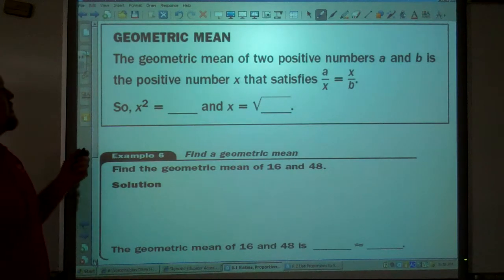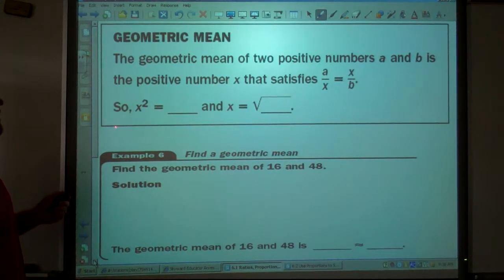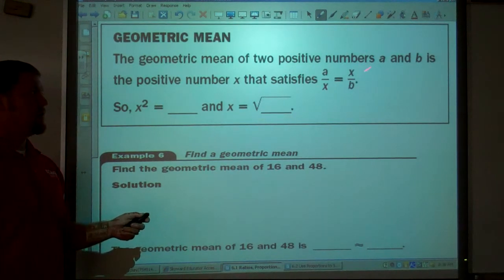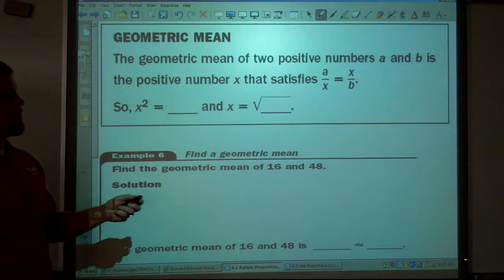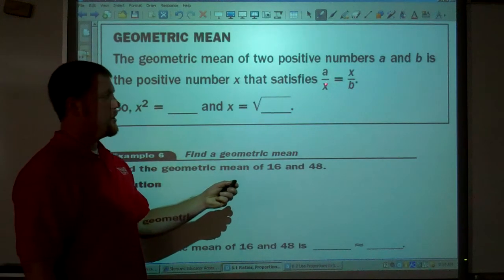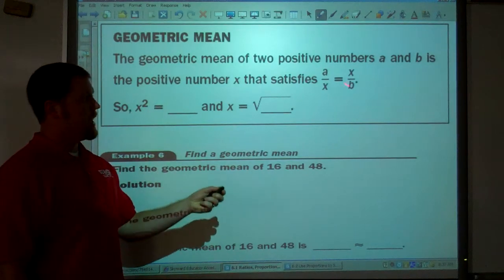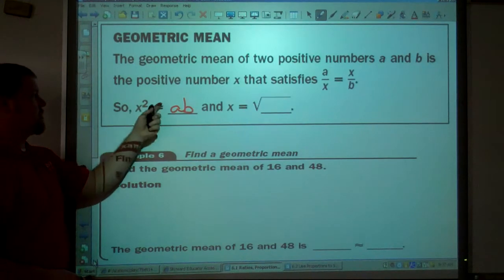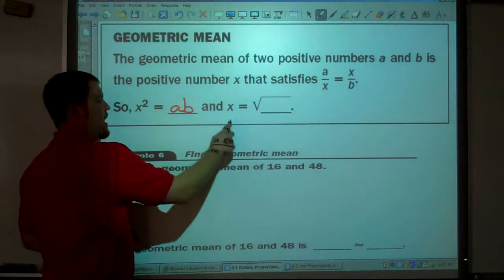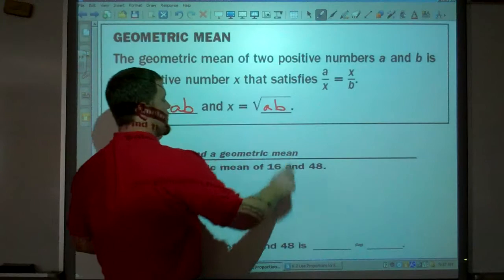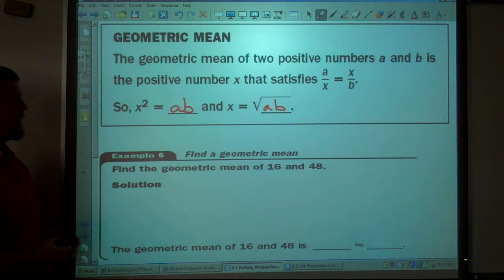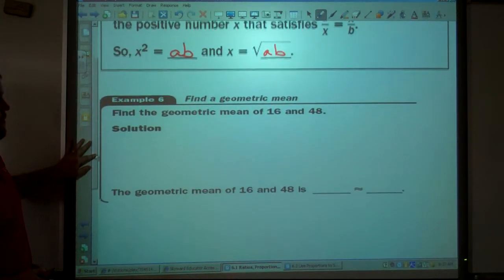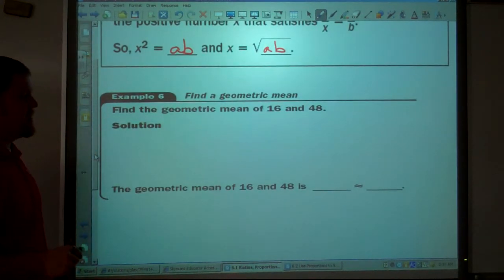The geometric mean of two positive numbers, a and b, is the positive number x that satisfies this proportion. And again, these are the means. Now, if you solve your proportion, it's x times x, which is x squared, equals a times b. So, x squared equals a times b. Solve for x. Well, you take the square root of this side, take the square root of that side. So, x equals the square root of a times b.